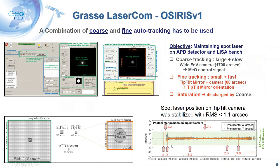Ten percent of the light is sent to a camera to control a tip-tilt mirror to stabilize the laser. The telescope performs coarse tracking and the tip-tilt mirror performs fine tracking. During the OSIRIS experiment, we managed to position the laser within 1.1 arcsecond RMS on the detector field.